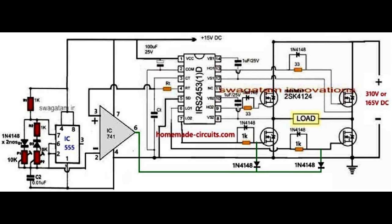Secondly, it perfectly synchronizes the SPWM with the main inverter frequency, enabling the inverter output sine waveform to be precisely in sync with the 50 Hz or 60 Hz on-off timing. The fast triangle waves are extracted from across the timing capacitor of the IC-555 astable C2. The fast triangle waves decide the frequency of each SPWM waveform, which must not exceed 300 Hz if the inverter transformer is an iron-core transformer.